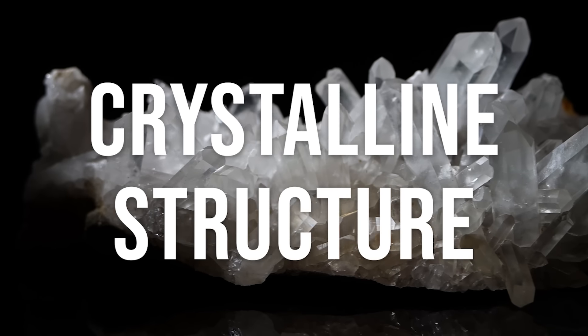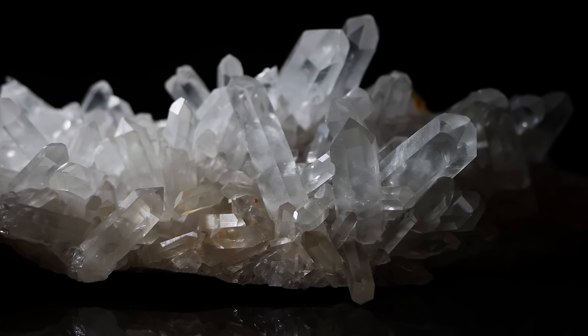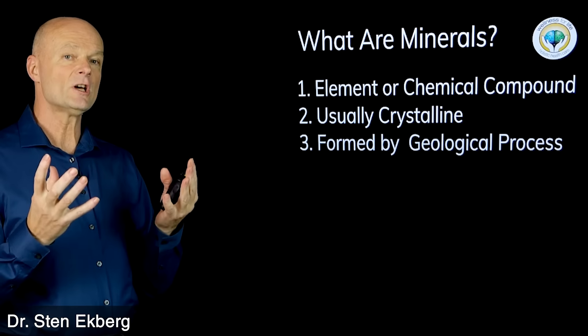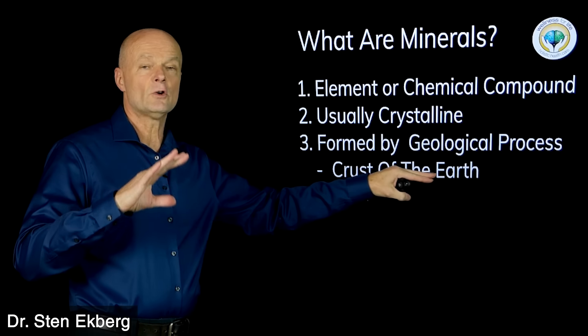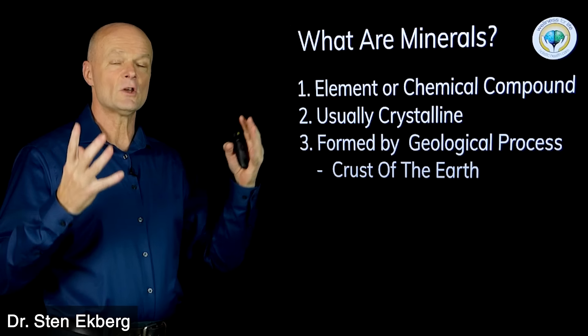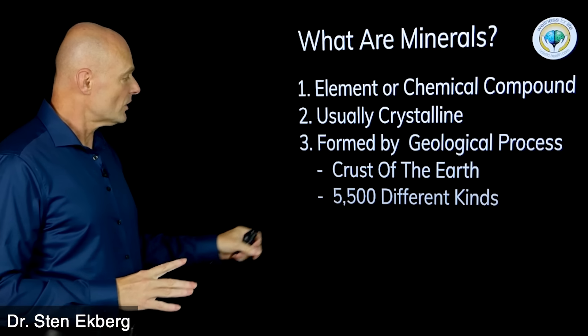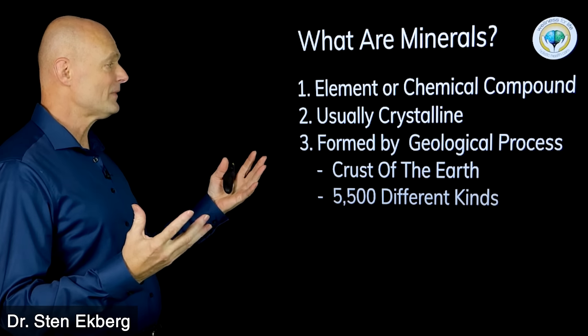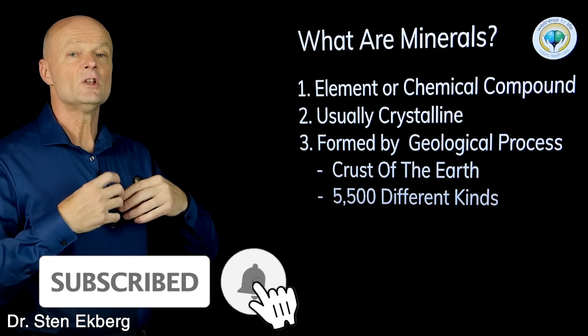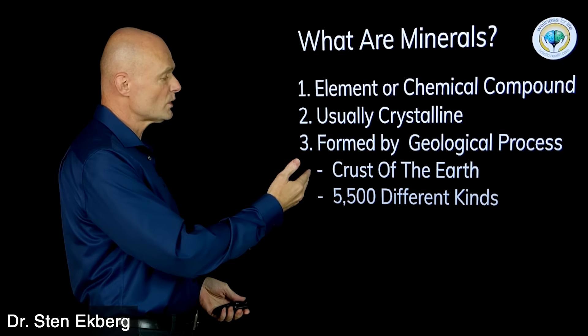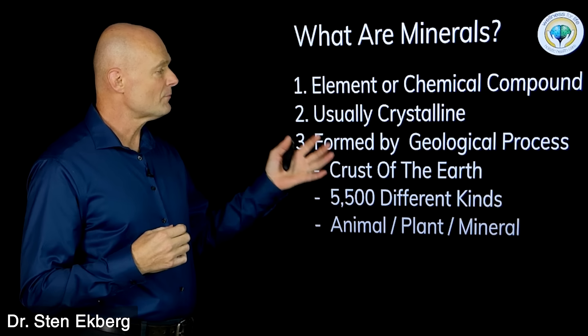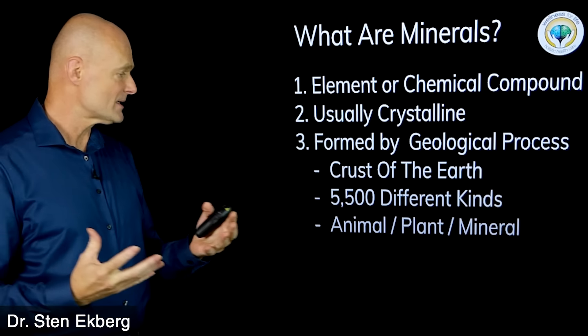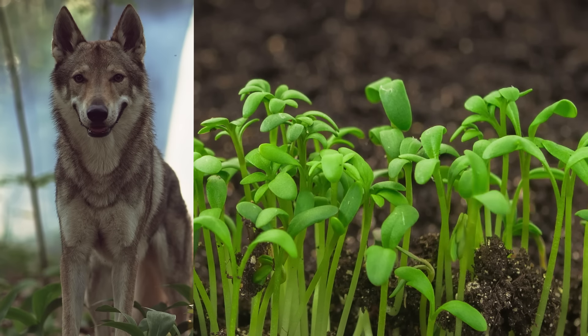Secondly, they're usually in a crystalline structure, so they form crystals spontaneously. And third, they were formed by geological events, in the formation of the planet. In the crust of the earth, that's where you find minerals. There's over 5,500 different kinds of minerals, but we're mostly interested in the ones that somehow make themselves into the human body or into plants that we can consume.